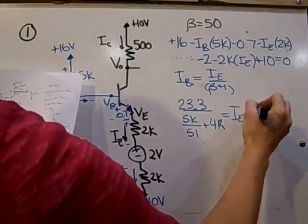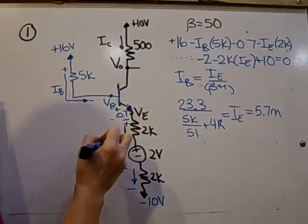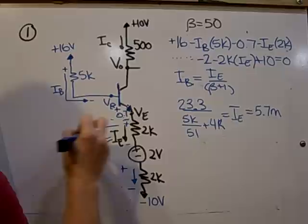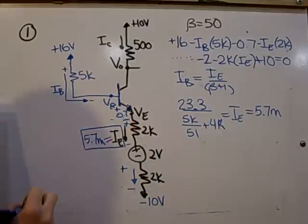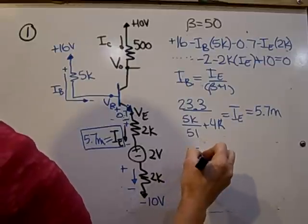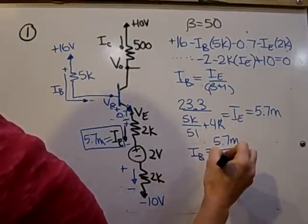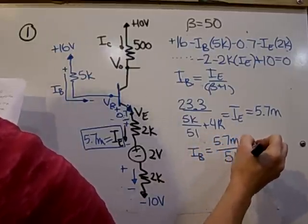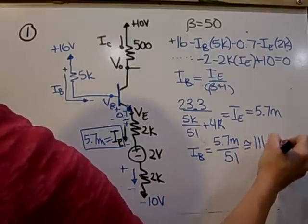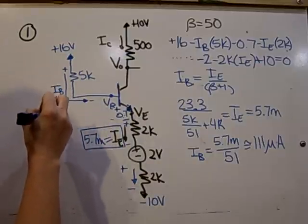And that equals IE, which gives 5.7 milli. So IE here is 5.7 milli. Now, from this going back, you can get IB, which is going to be 5.7 milli over 51, which is approximately 111 microamps. So IB here is 111 microamps.